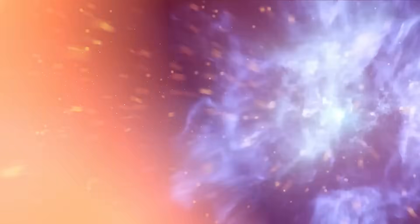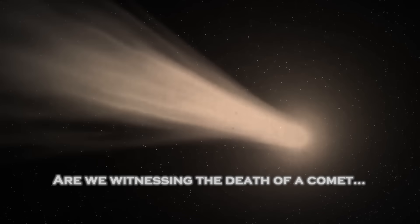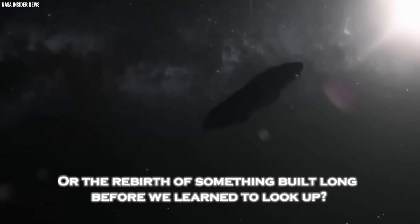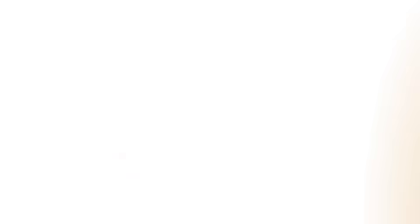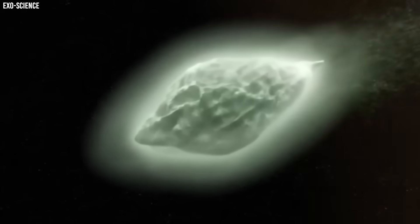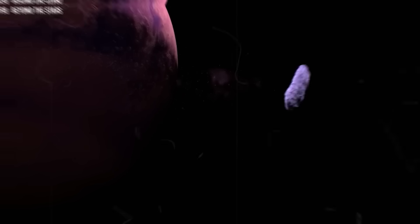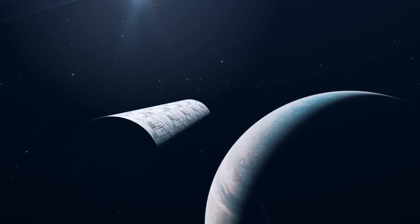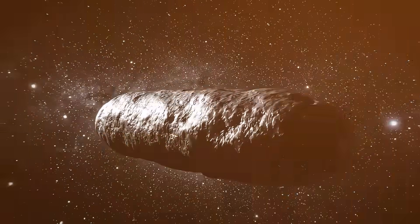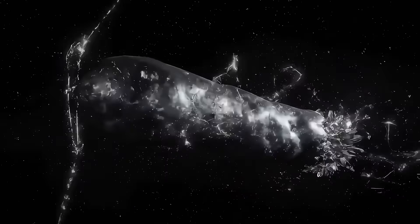And as 3I Atlas continues to recede toward the outer solar system, broken, yes, but eerily functional, it leaves humanity not with answers, but with a question far older than science. Are we witnessing the death of a comet or the rebirth of something built long before we learned to look up? Because if this object truly activated itself at perihelion, if those jets were intentional, if the breakup was a sequence rather than an accident, then we may have just watched the first interstellar machine in human history perform an operation designed eons ago, not for us, not with us in mind, but seen by us all the same.